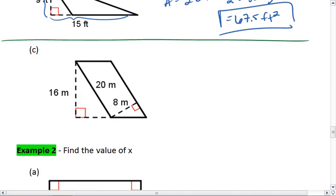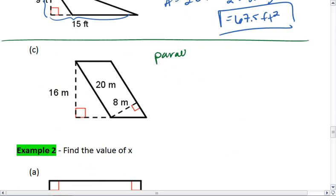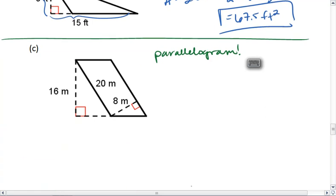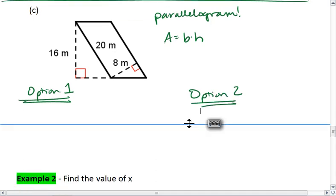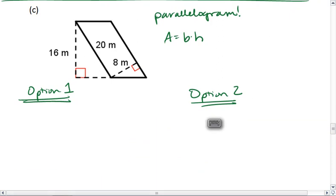Lastly, for our parallelogram. Parallelogram, the general formula for the area, is base times height. However, it depends what we use as our base and what we use as our height. I'm going to do this in two different ways. I'm going to look at option 1 and option 2. You can do this either way. It doesn't matter. You just need to pick the way that you like best.